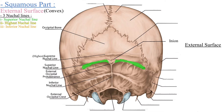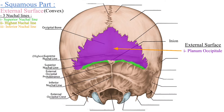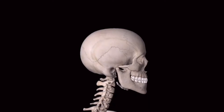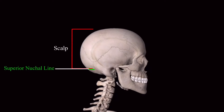So a total of three nuchal lines are present on the external surface of the occipital bone: the superior nuchal line, the highest nuchal line, and the inferior nuchal line. The superior nuchal line divides the external surface into two parts — the area above it is called the planum occipitale, while the area below it is called the planum nuchae. The superior nuchal line is also the border between the scalp and the neck.